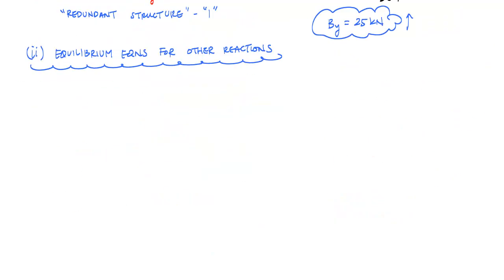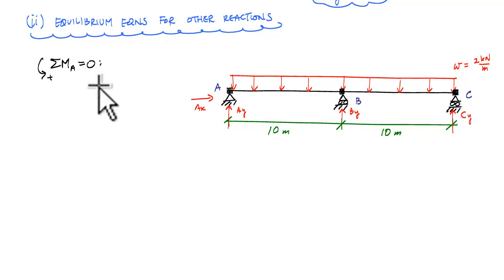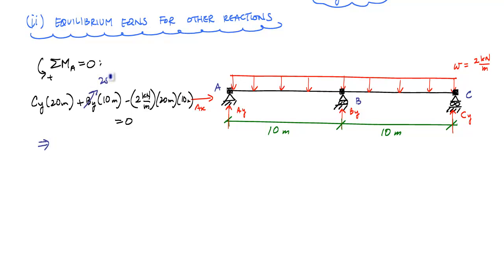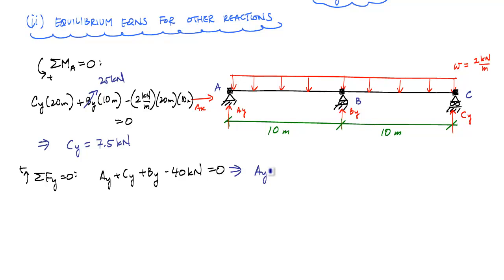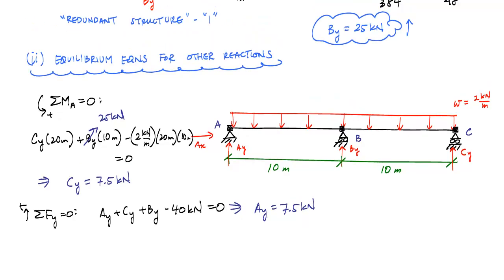With B_Y known as 25 kilonewtons, I can use the remaining equilibrium equations on the original beam. Taking the sum of moments about point A equal to zero and substituting B_Y = 25 kN, I get C_Y = 7.5 kilonewtons. Then summing forces in the vertical direction gives A_Y = 7.5 kilonewtons. Those are my reactions: A_Y, B_Y, and C_Y, all acting upward.